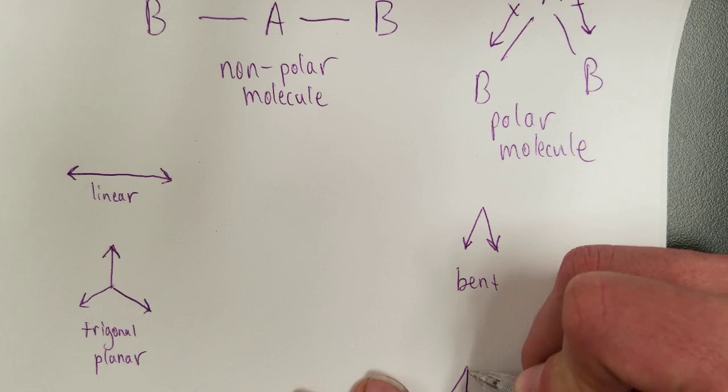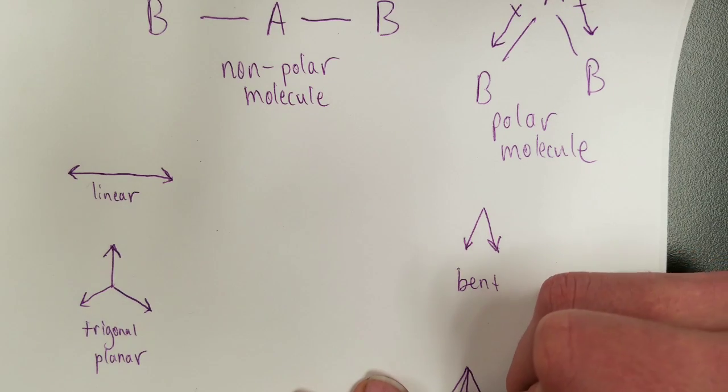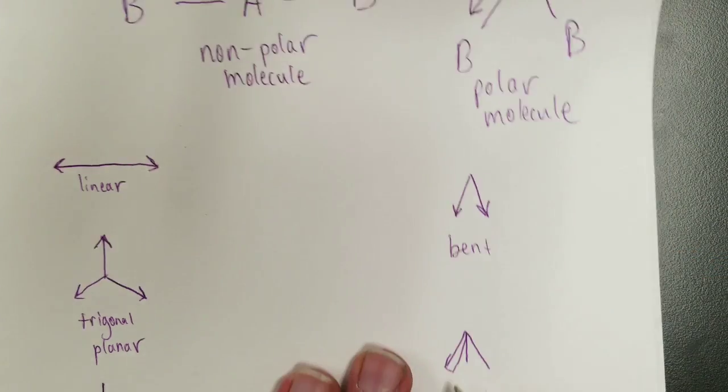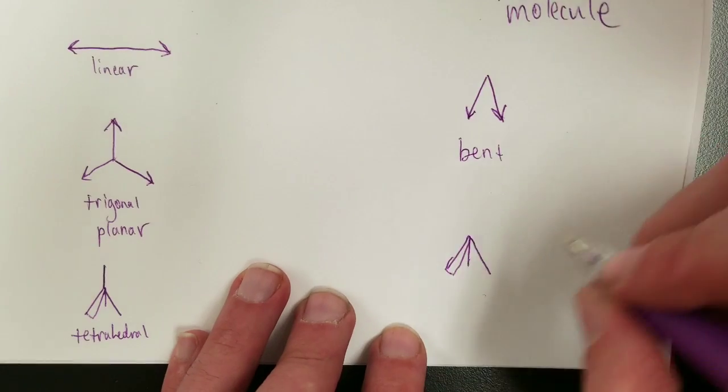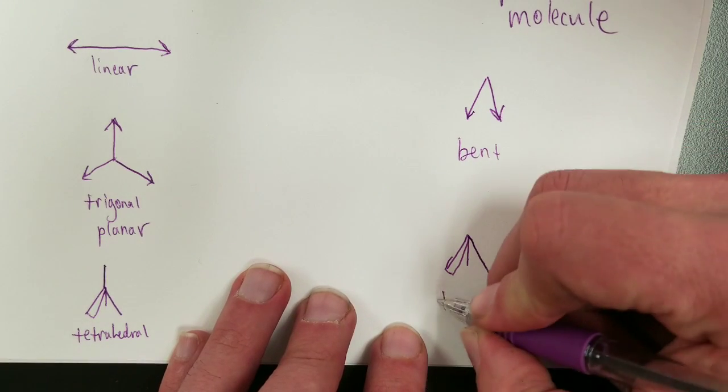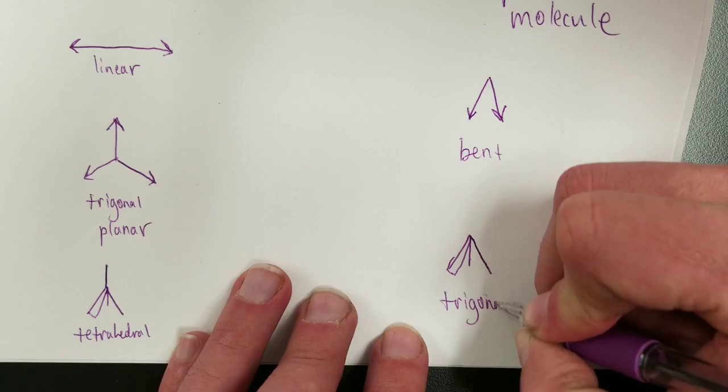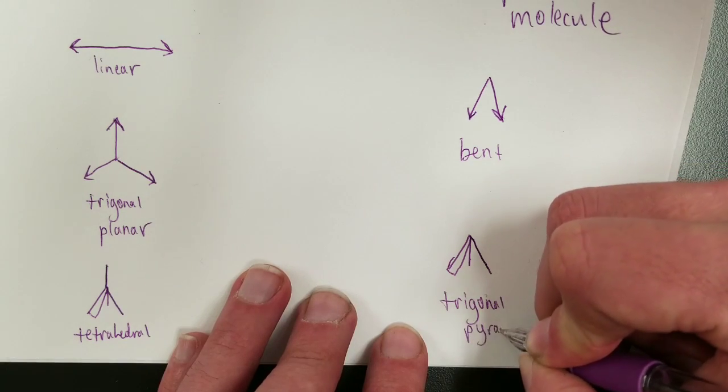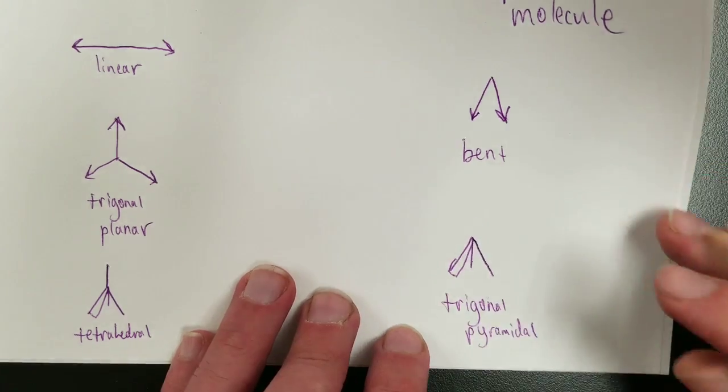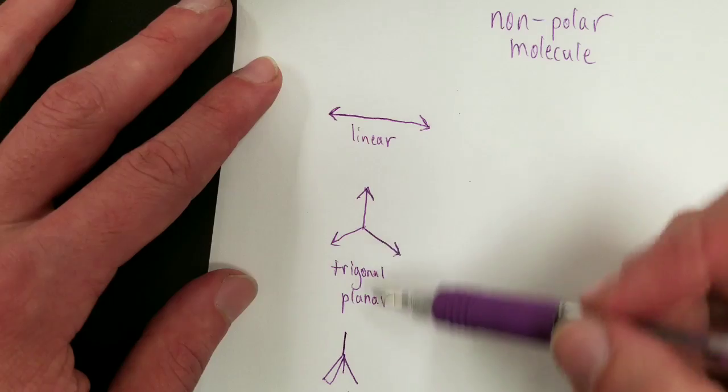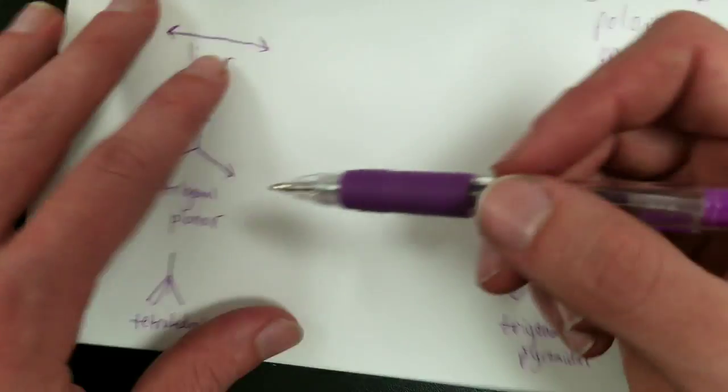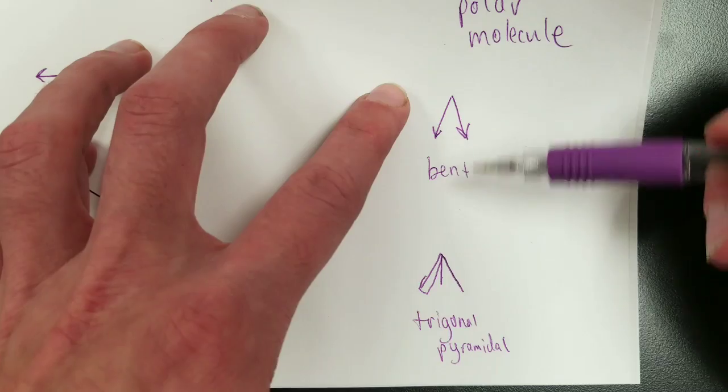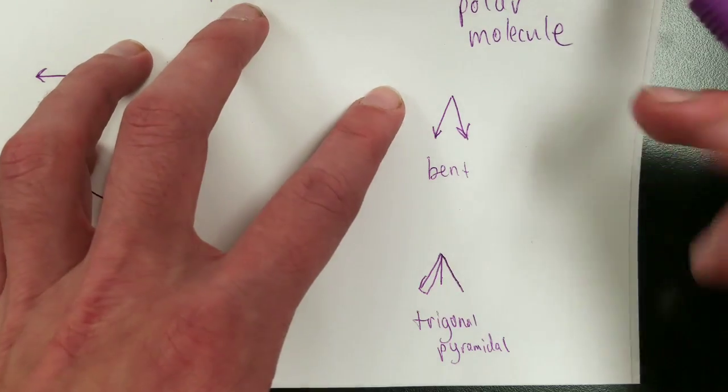A trigonal pyramidal shape. This is my attempt at a trigonal pyramidal shape. There's one pointing out toward the viewer, there's one in the background, one kind of off to the side. Trigonal pyramidal. If these are polar bonds, they will produce a polar molecule as well.